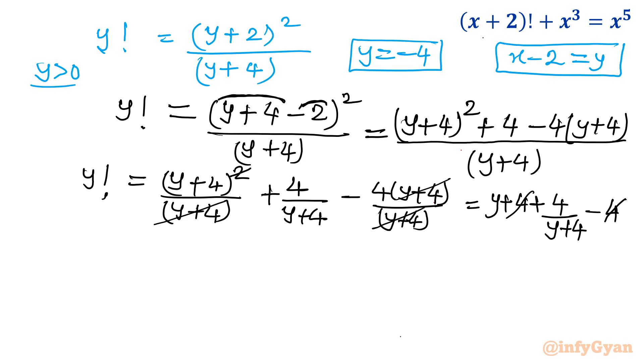y plus 4 plus 4 over y plus 4 minus 4. So again, I will cancel 4 and minus 4. What is left? y factorial is equal to y plus 4 over y plus 4.